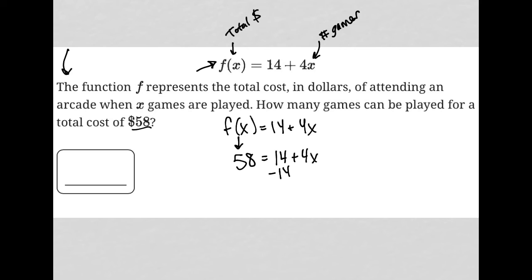So how do I solve for x? I subtract 14 from both sides of the equation. I get 44 equals 4x. I divide both sides of this equation by 4. And I get x is equal to 44 divided by 4, which is 11. And therefore, the correct answer here is 11.